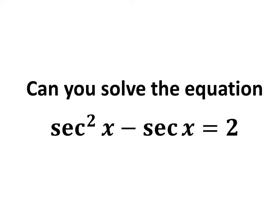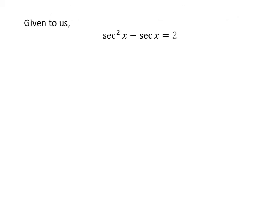In this video, we will learn to solve the equation square of secant of x minus secant of x is equal to 2. Given to us: square of secant of x minus secant of x is equal to 2.